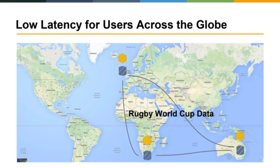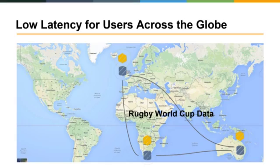The second requirement was low latency for users spread across the world. For example, if you're running a mobile application for a global event like the Rugby World Cup, you want replicas of your data and the API as close as possible to users in Europe, South Africa, Australia, and so on. And if your data is not read-only, you need active-active replication across multiple regions — this is becoming a very common requirement.